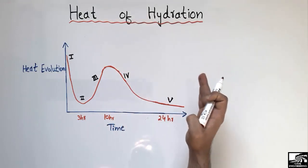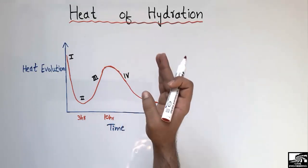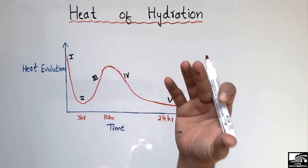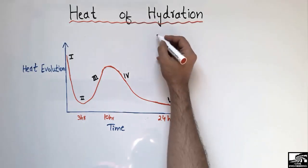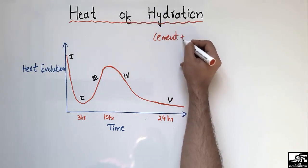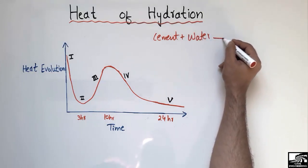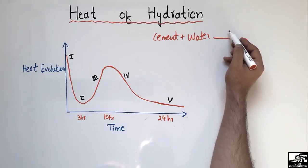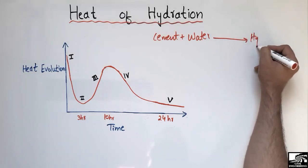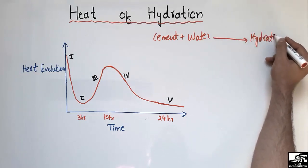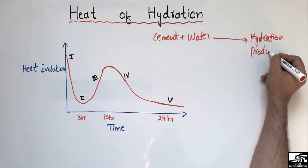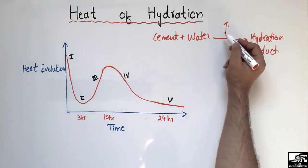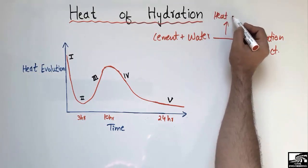In this lecture we are covering how the heat of hydration changes with time in the cement. Basically, when water is added to the cement there is an exothermic reaction in which heat is released and produces some strength hydration products. This reaction process is called an exothermic reaction, or the hydration process, and it produces hydration products which are the strength products producing the strength of cement.